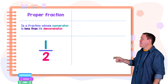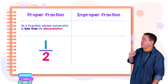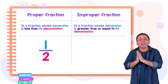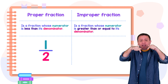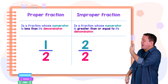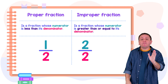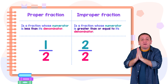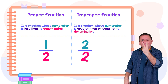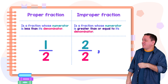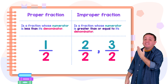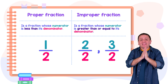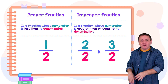Now we're going to focus on the improper fraction. It's a fraction whose numerator is greater than or equal to its denominator. For example, two halves is an improper fraction given that the numerator two is equal to the denominator two. The fraction three halves is another improper fraction because the numerator three is greater than the denominator two.